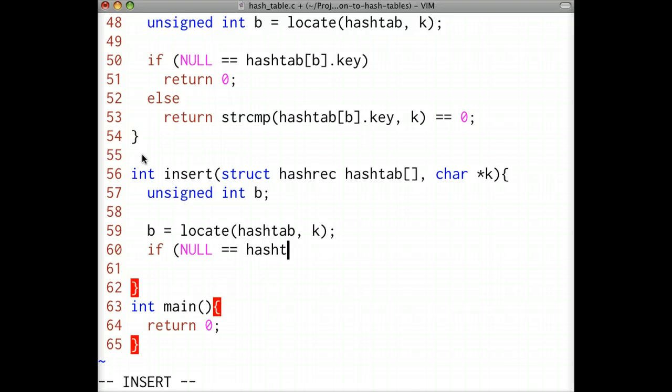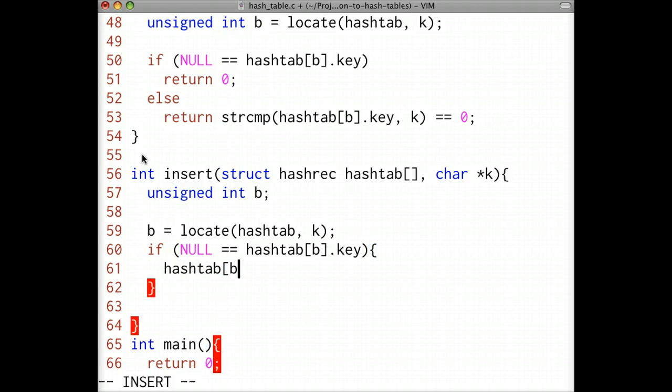If the locate function returns an empty bucket, then we'll make a copy of the target key and insert a new record by copying the target key into the bucket key. Remember that the memory allocated for this key should be deallocated with the free function, but for now I've left this part out. We'll return one to indicate that the insertion was successful.